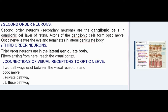Second-order neurons (secondary neurons) are the ganglionic cells in the ganglionic cell layer of retina. Axons of the ganglionic cells form the optic nerve. The optic nerve leaves the eye and terminates in the lateral geniculate body. Third-order neurons are in the lateral geniculate body, and fibers arising from here reach the visual cortex.